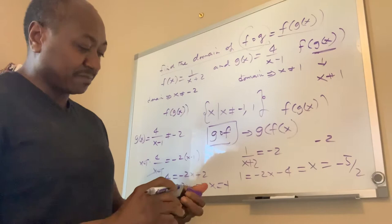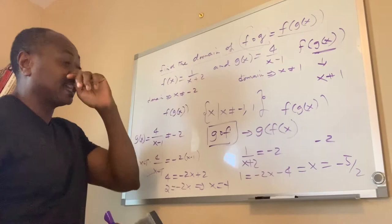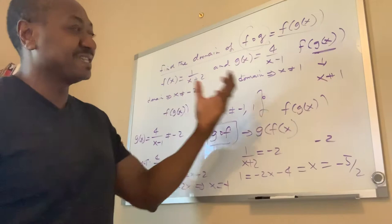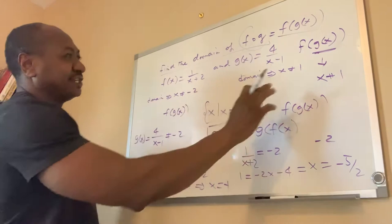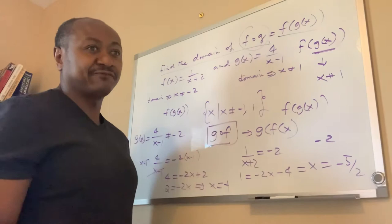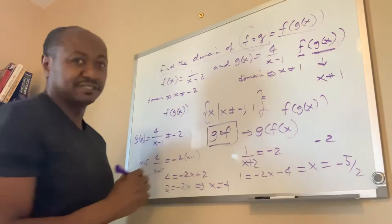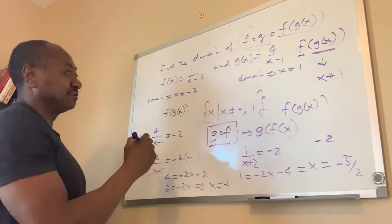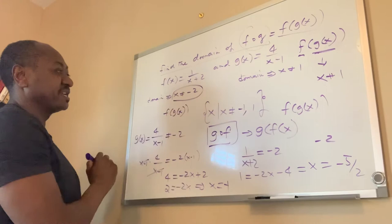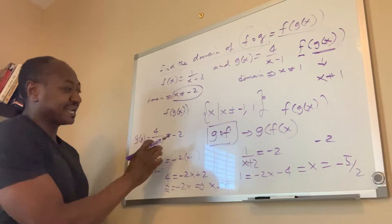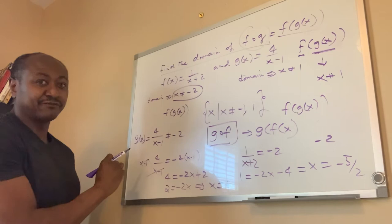The other thing we talked about yesterday — and I'm not sure most of you understood it, but if you watch the video I sent out last night you'll see — is that the domain of g of x is part of the domain of the composite function, but what is not part of the domain is the domain of f of x. So what we say is that the domain of f of x is negative 2, meaning g of x cannot equal negative 2.